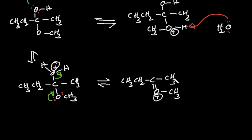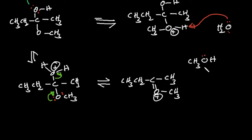This intermediate reacts with another alcohol because it is now an electrophile — it has electrophilic ability. This alcohol has a lone pair, similar to the previous step. This lone pair makes a bond with the carbonyl carbon and breaks this bond.